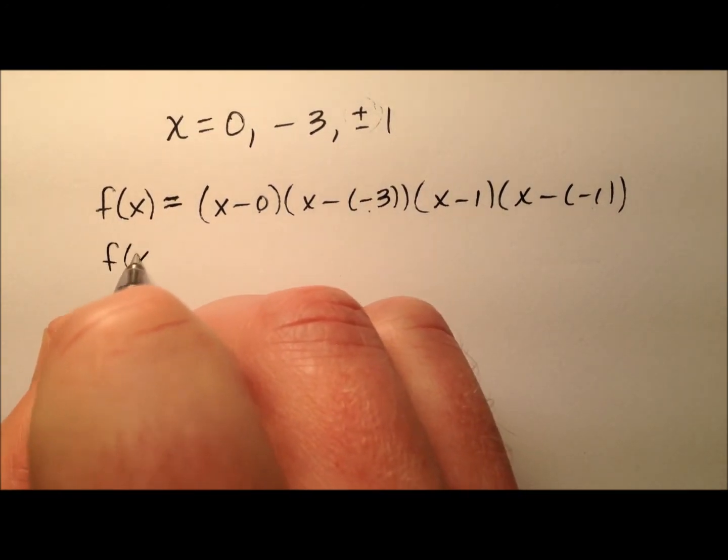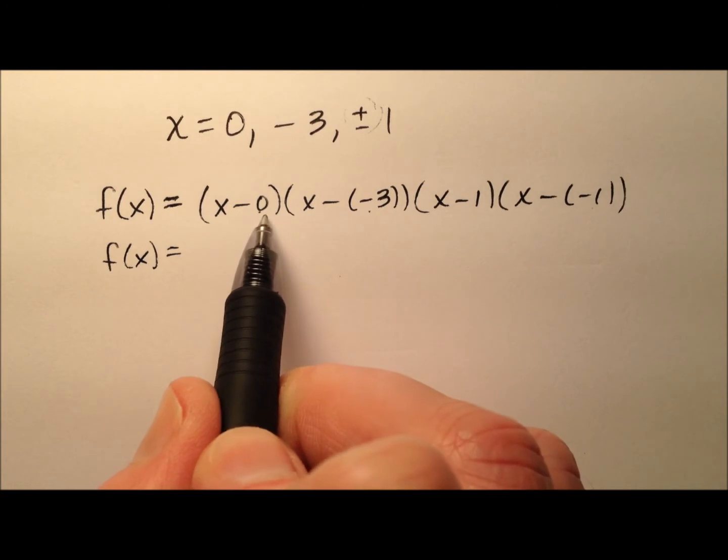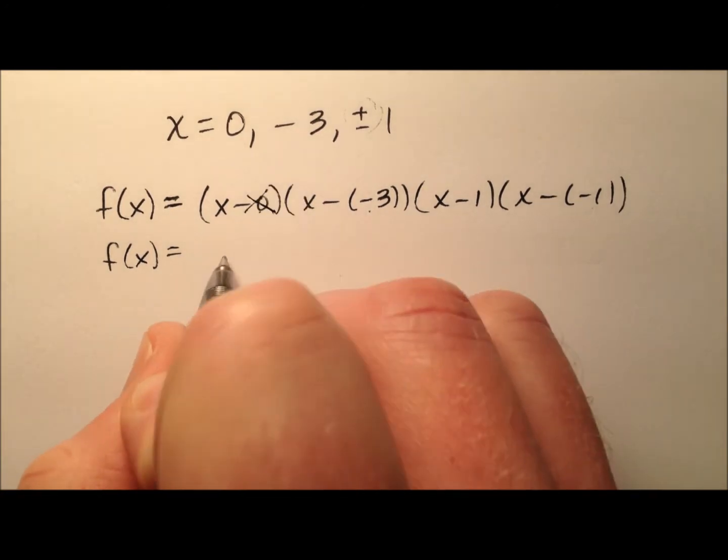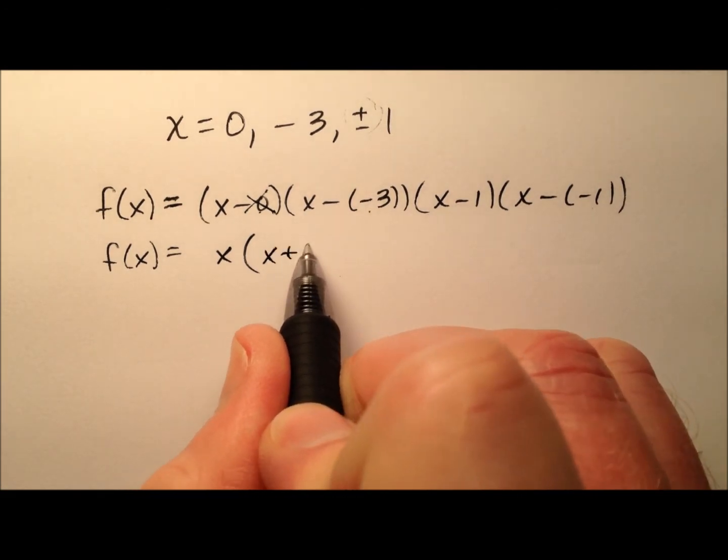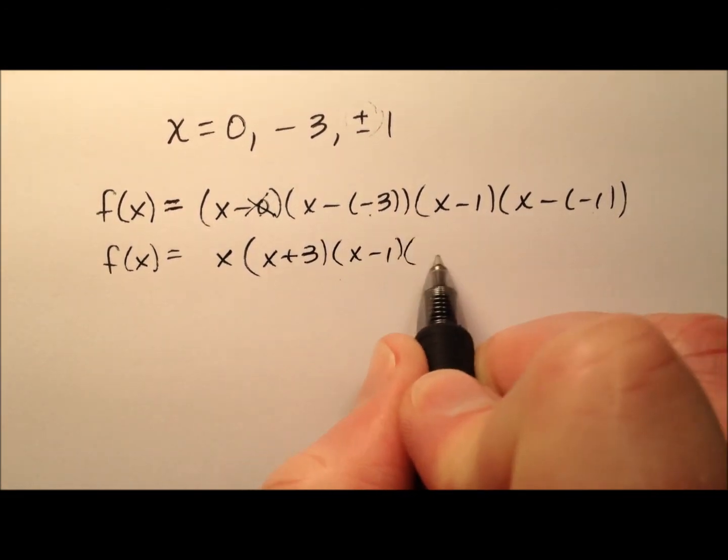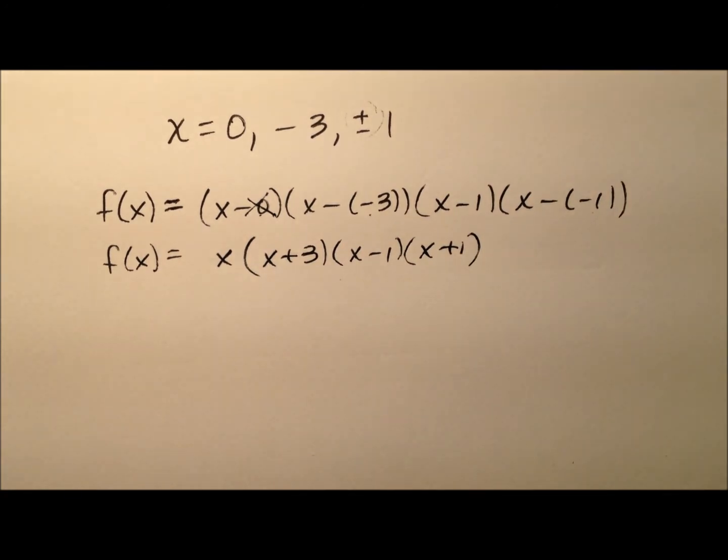Okay, let's go ahead and clean this up just a little bit. The x minus 0, I don't really need to write the minus 0. I can just put the x out front, and then here we have an x plus 3, and then here we have an x minus 1, and an x plus 1.